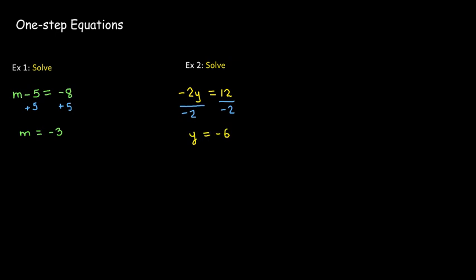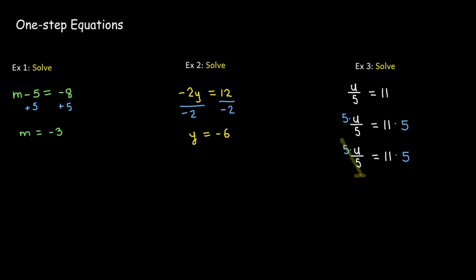In the third example, the variable u is being divided by 5 to get 11. To undo division, I multiply both sides by 5. On the left side, 5 over 5 is a form of 1, and 1 times u is u. So I get u equals 55.